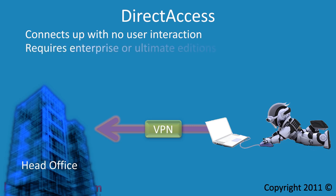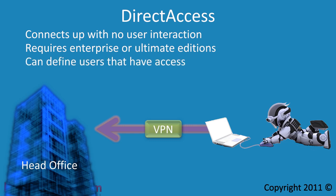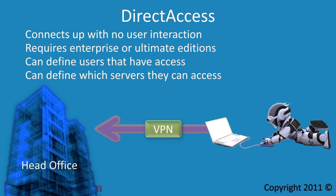In order to use direct access you need to be running the Enterprise or Ultimate edition of Windows 7. With direct access you can determine who can use direct access and also which servers they can connect to. Direct access also supports NAP, or Network Access Protection — a system which performs a number of compliance tests on the computer before it is allowed on the network.